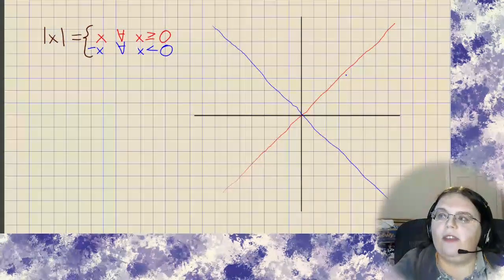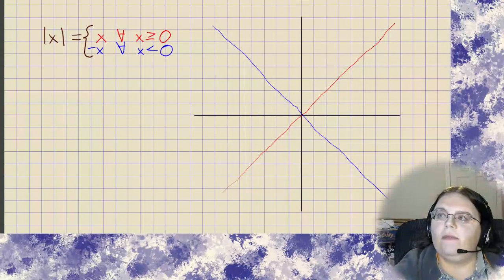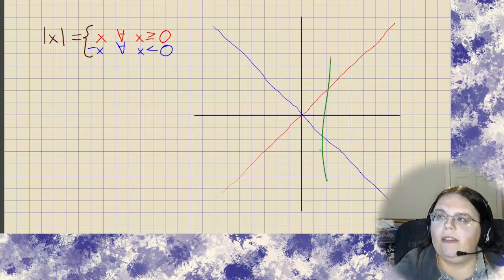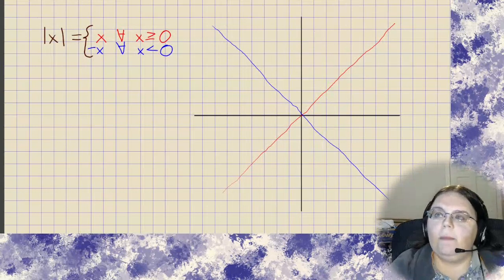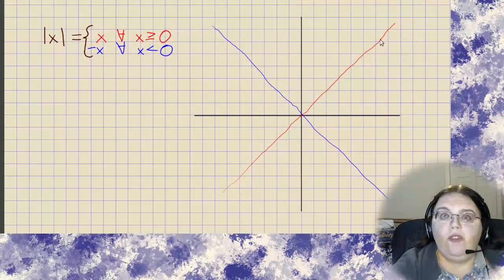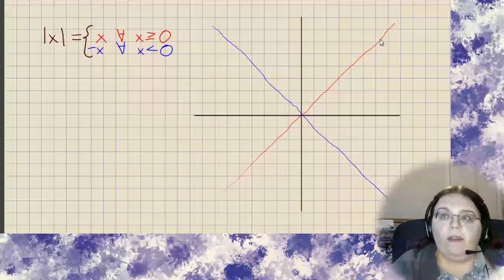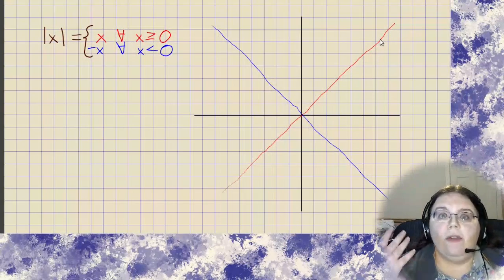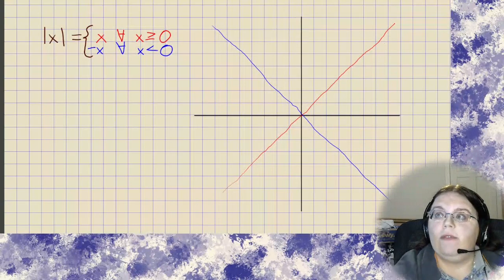But here's the question. If we try to throw some vertical line tests on this, we've got a problem. We can see that we're going through in two places. But that's because this drawing here with two functions drawn in it isn't our final answer for our graph of the absolute value of x.